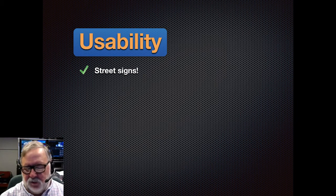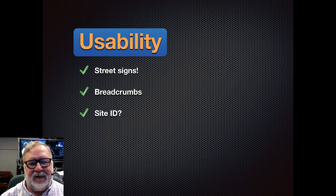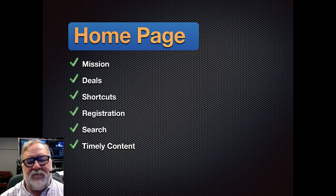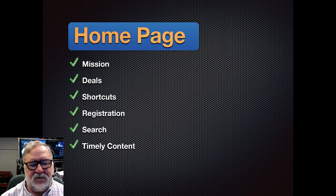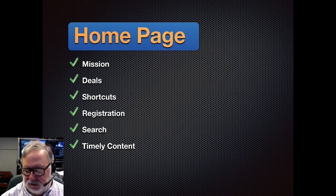Street signs — that's what we had on BH Photo: breadcrumbs and a site ID. These are all things that should be on there. On the homepage, it should perhaps have a mission, some details, shortcuts. If it's a site where you need to register, it has to have a registration link, a search function, and it should have timely content.